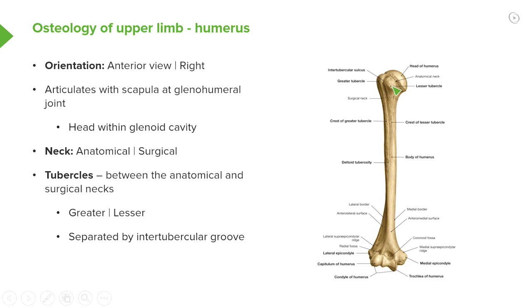The second neck is the surgical neck, which runs around the humerus below, or inferior to, these two tubercles.